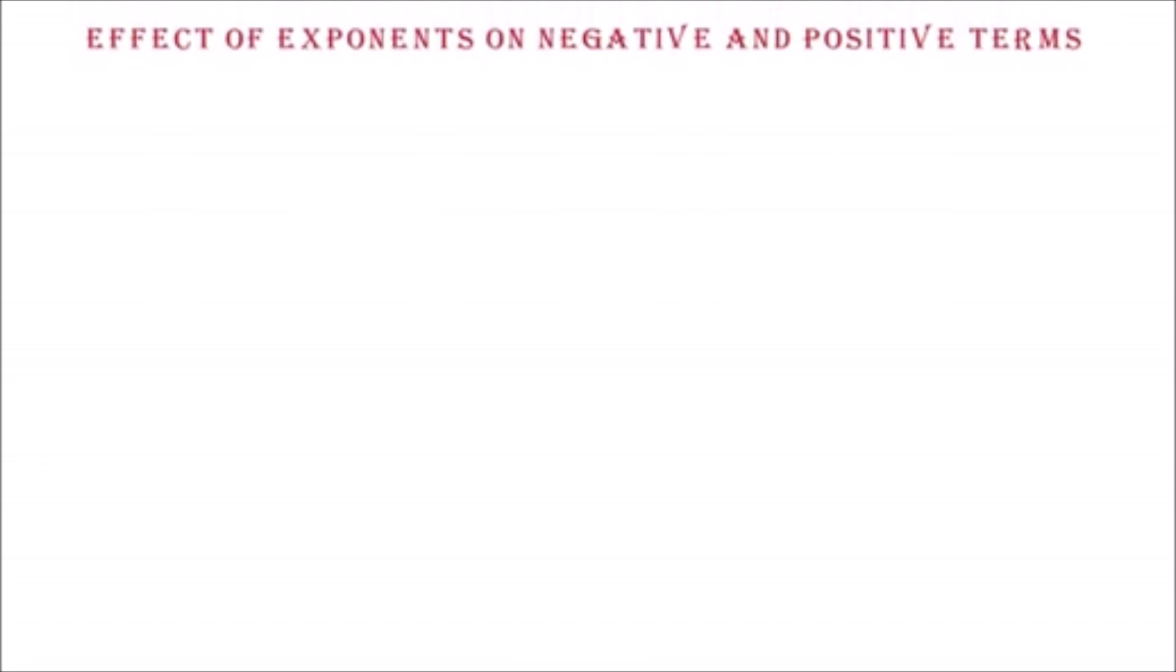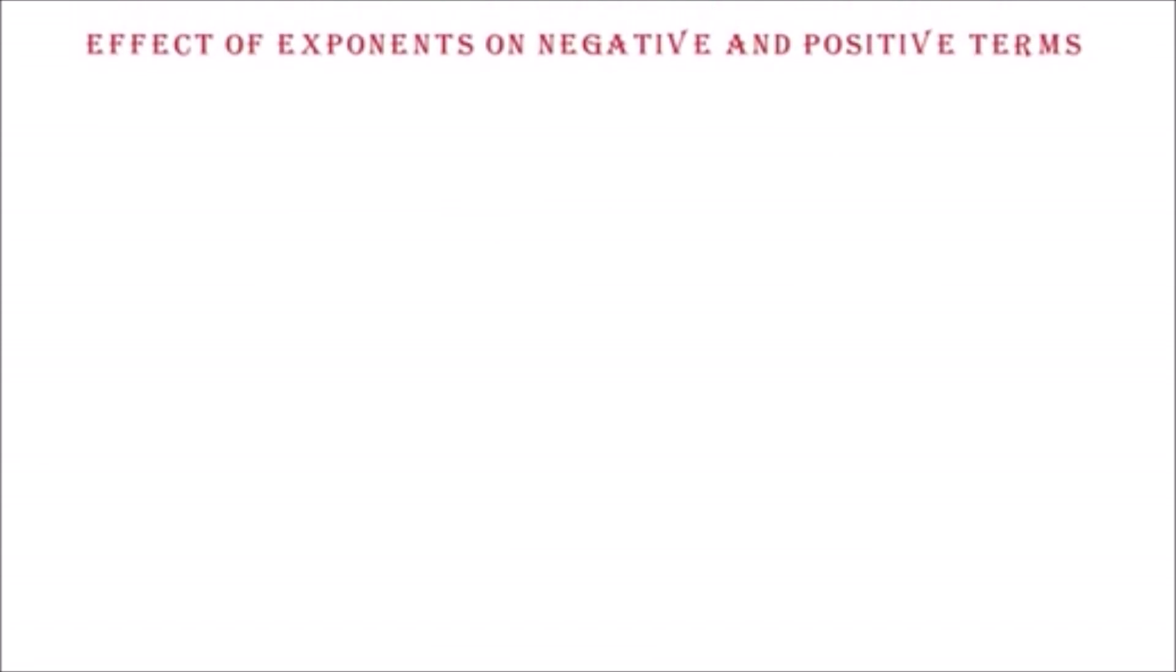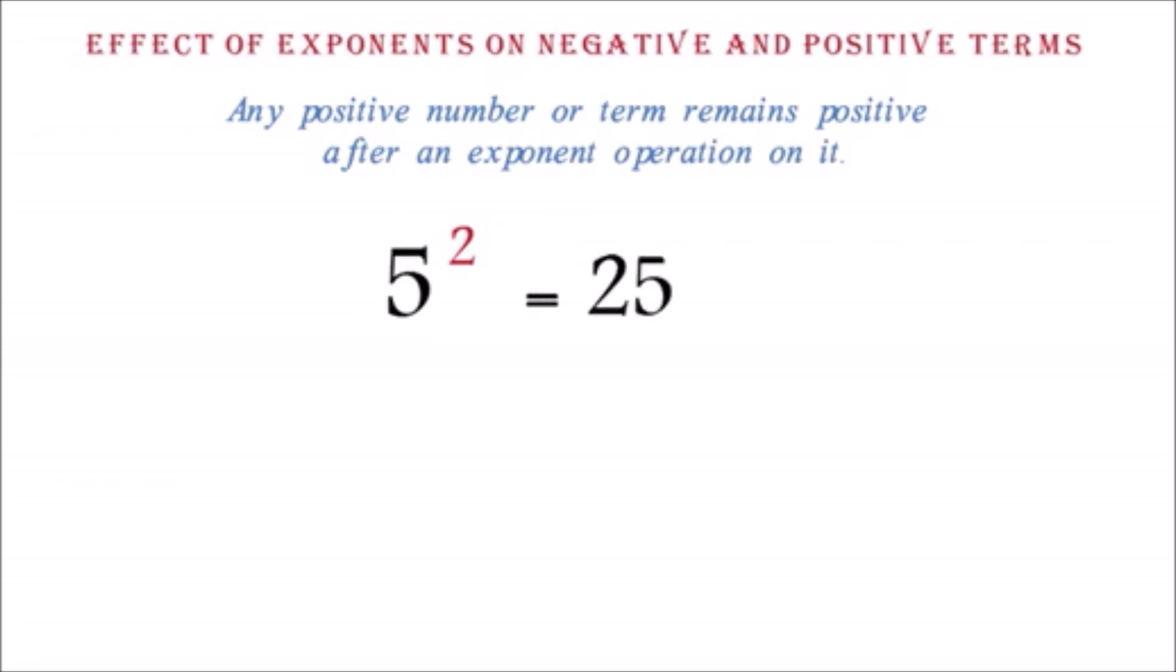Effect of exponents on negative and positive terms. Now, let's look at some important information about exponents. Any positive number or term remains positive after an exponent operation on it. Example: 5 squared equals positive 25.